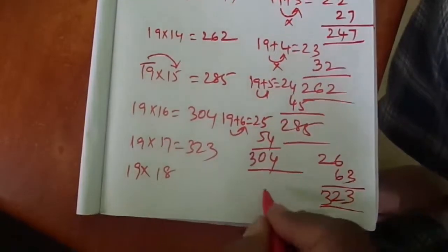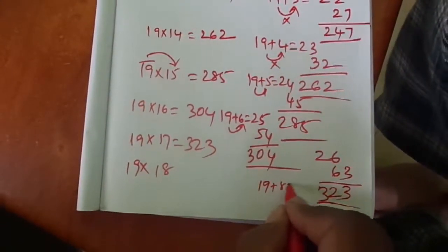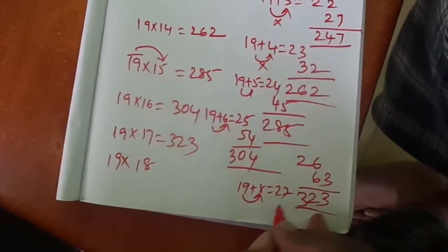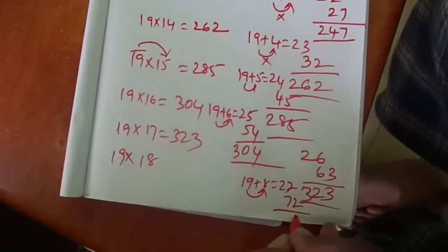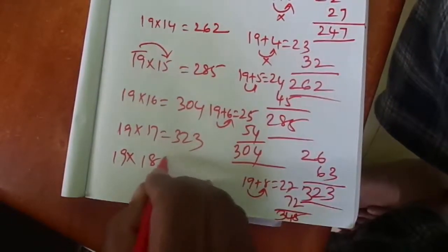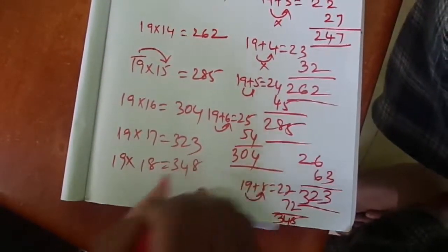19 × 18: 19 plus 8 is 27. 9 into 8 is 72. The answer is 348.